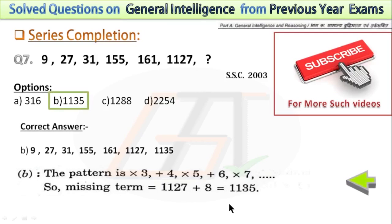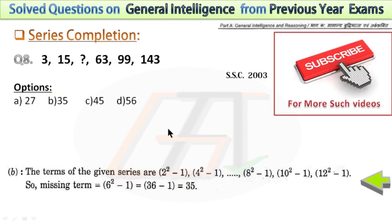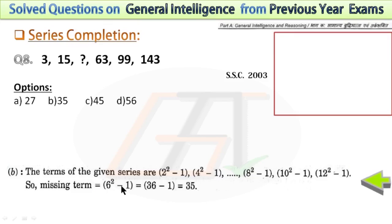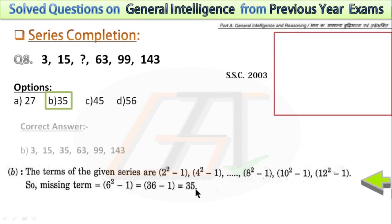In the next problem, I have shown the pattern of this series in the explanation. 2 squared minus 1 gives 3; 4 squared minus 1 gives 15; 8 squared minus 1 gives 63. The bases 2, 4, 6, 8 are consecutive even numbers. So the missing term uses base 6: 6 squared minus 1, which is 35. So 35 will be the missing term.